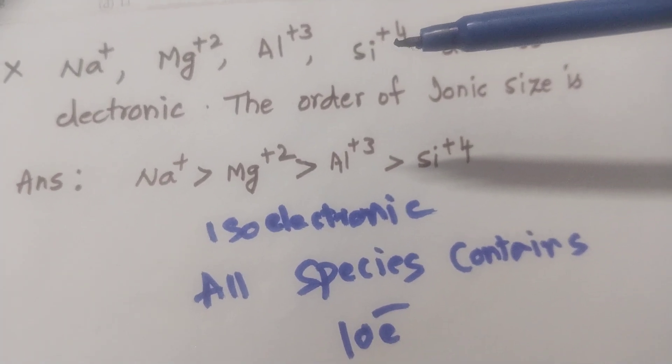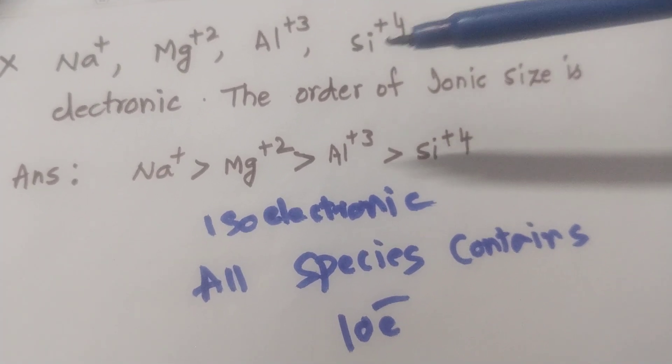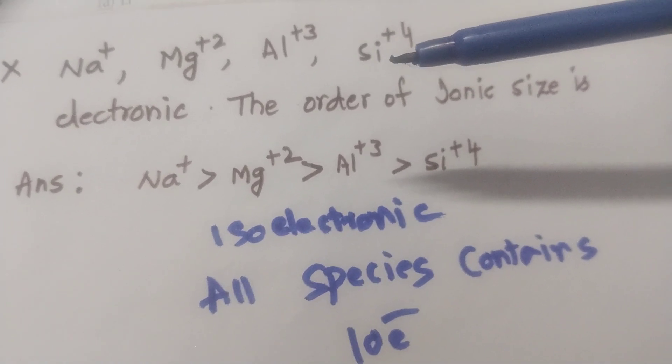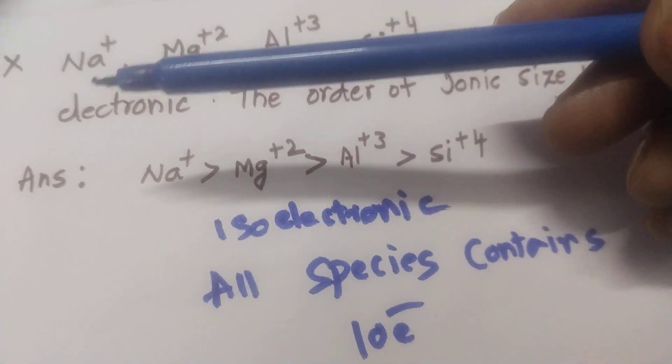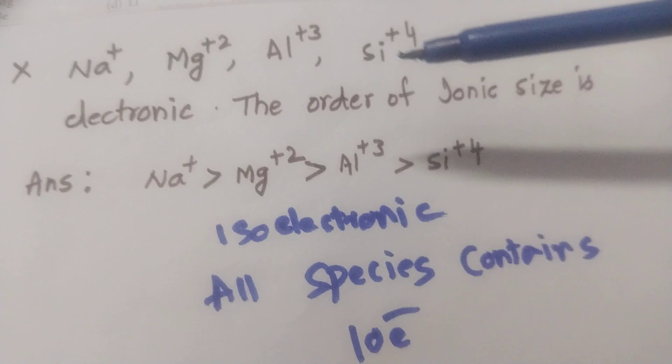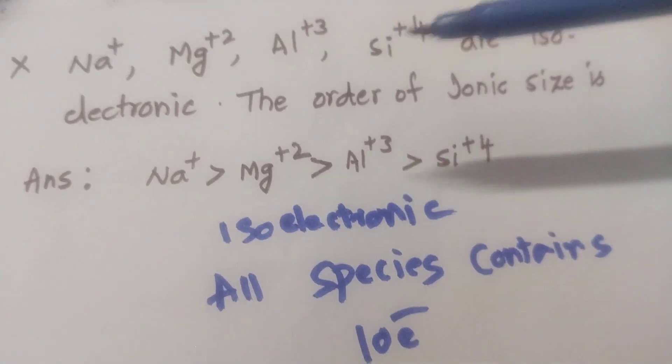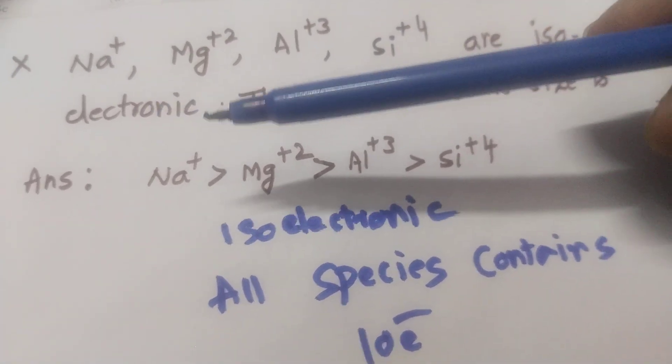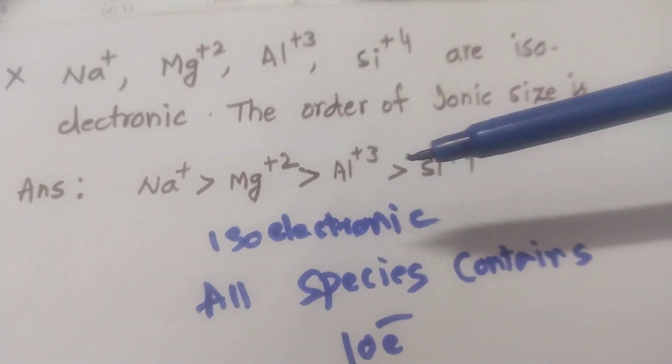Silicon atomic number 14 loses 4 electrons, converted to Si+4, number of electrons are 10. So all the 4 species possess or contain 10 electrons, then I can say they are called as isoelectronic series.